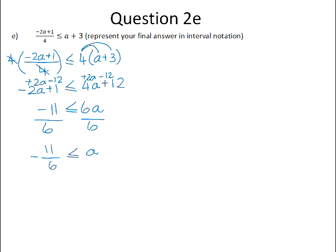We are asked to represent our final answer as an interval. So if a is greater than negative 11 over 6, it means that negative 11 over 6 will be the smallest number. It's greater than or equal to negative 11 over 6, so it gets a square bracket, and it's all the numbers bigger than that, so it will end at positive infinity, and infinity always gets a round bracket.